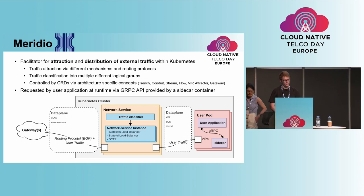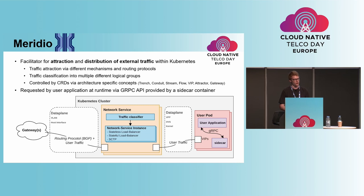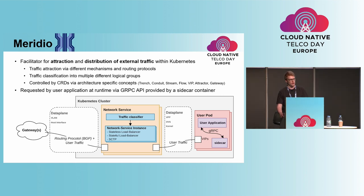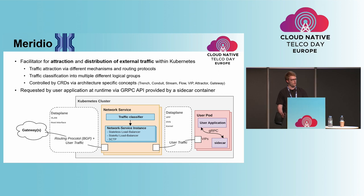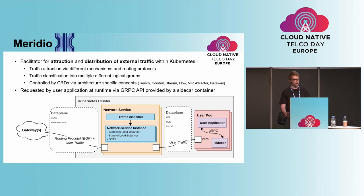So, what is Meridio? Meridio has the objective to facilitate the attraction and distribution of external traffic within Kubernetes via secondary networks. To achieve this, multiple controls are provided to users to control the different concepts Meridio offers. Users can modify traffic attraction with configurable external networks, for instance VLAN or host network interface. They can deploy new network services and configure them with traffic classification, which separates the traffic into multiple different logical groups that applications can subscribe to. In Meridio, everything is adapted during runtime, so all networks and virtual wires are added or removed based on how the user configures the system. The last configurable part is on the application side: a sidecar container runs to provide a gRPC API that applications can use to connect or disconnect network services, and the virtual wire will be attached or detached from the application pod to start or stop receiving traffic.